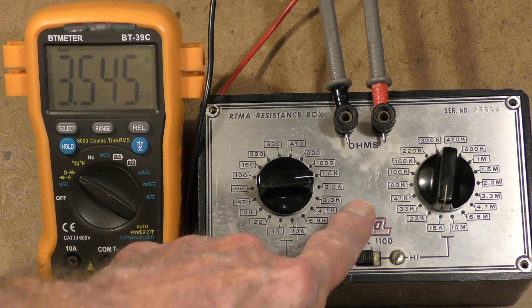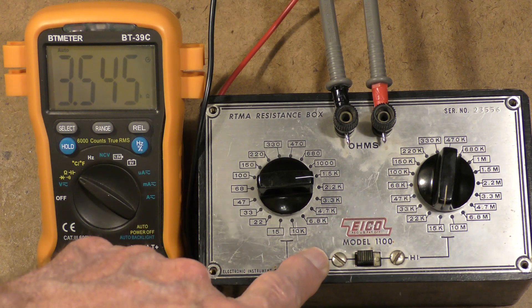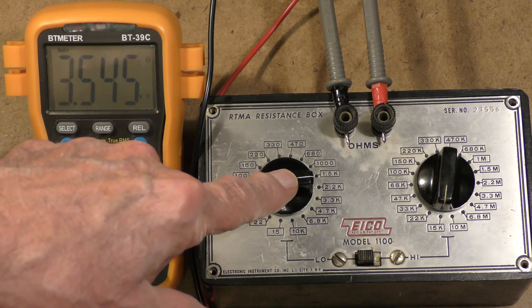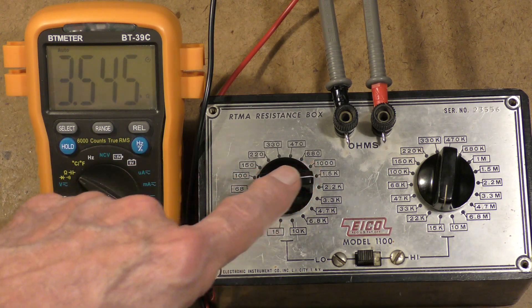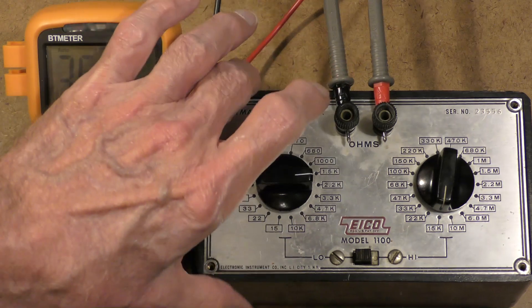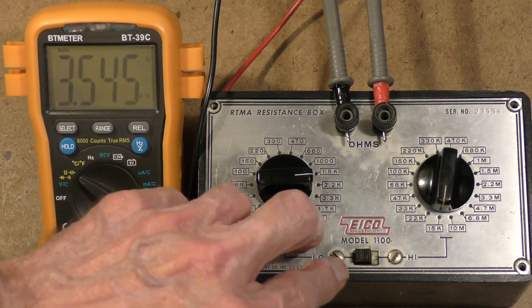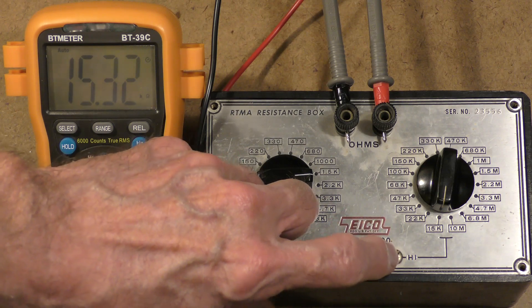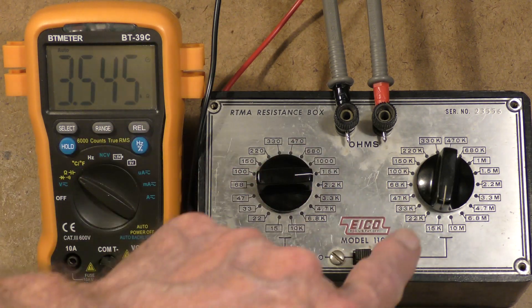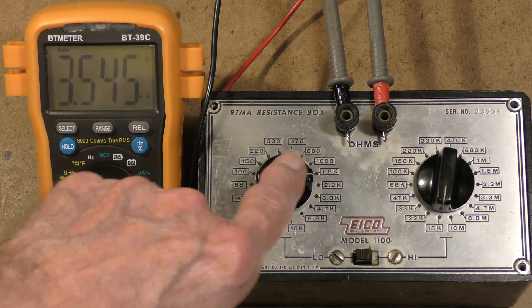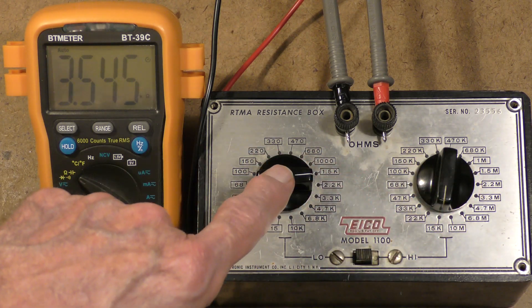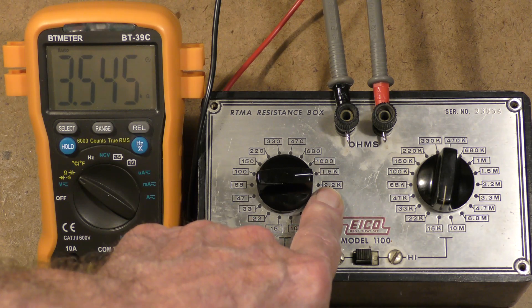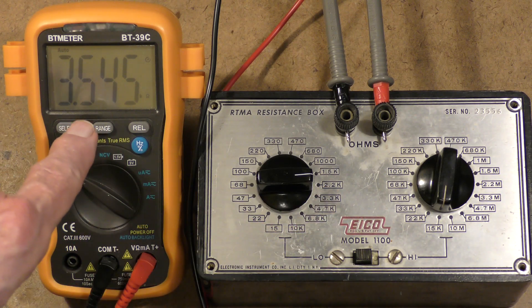This is a resistance substitution box and one of the problems with these boxes is the resistors in them often are carbon composition which tend to drift up with age. You can see that here. This is set to 2.2K. This switch switches from high resistance, which is this knob, to low resistance. Now I've already cleaned the contacts inside on the switch as well as on these rotary switches and I have verified that the problem is that the actual resistor that should be 2.2K is actually reading 3.5K.